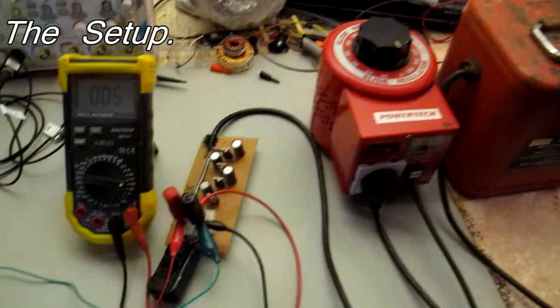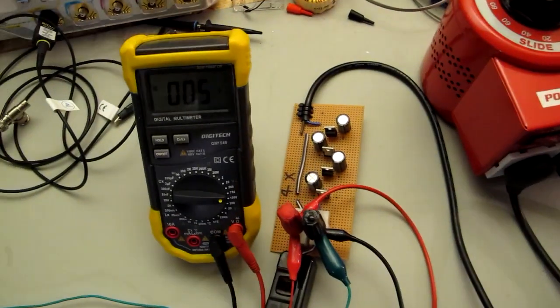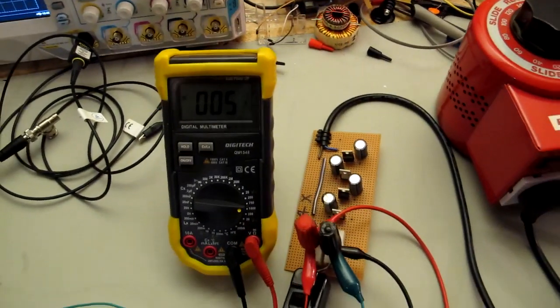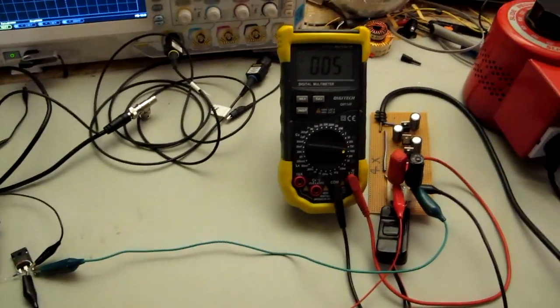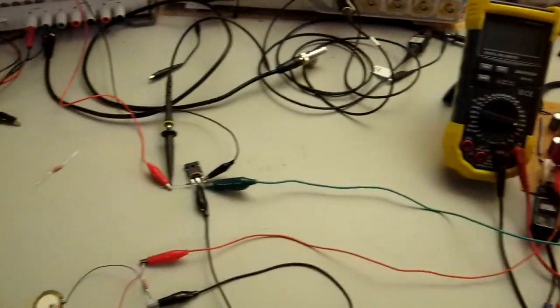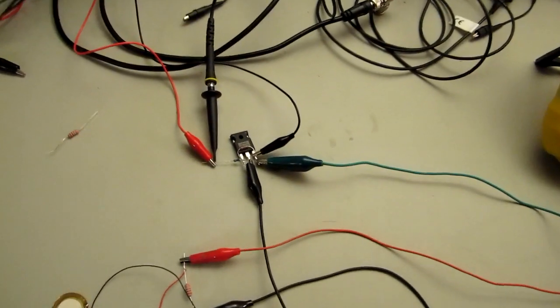As before, I'm using the Variac to drive a cascade multiplier which gives me four times the input voltage. I've had to swap to my other meter because this one's rated for a thousand volts, the other one's only rated up to six hundred, and a thousand volts is the goal.